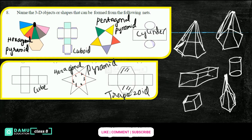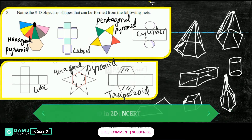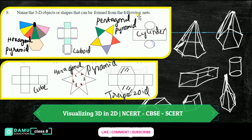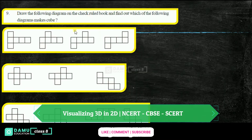You'll get a trapezoid shape like this. Thanks for watching, please subscribe. In this next question, what is given is: draw the following diagrams on the squared book and find out which of the following diagrams makes a cube.